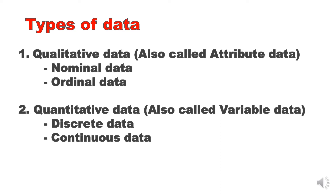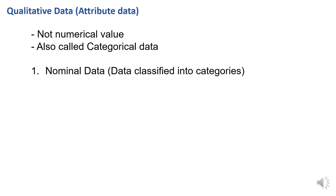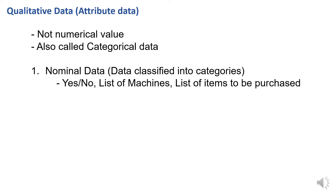So let's understand all four types. First, qualitative data. Qualitative data does not have a numerical value, but we can classify the data into categories. The first type is nominal data — data classified into categories. For example, yes or no. Suppose we have a check sheet: some items are yes, some items are no. Yes items on one side, no items on the other side.